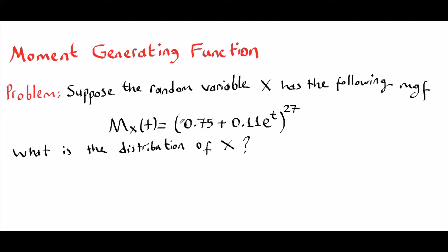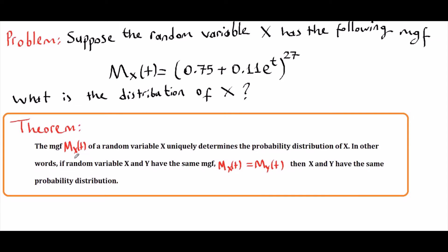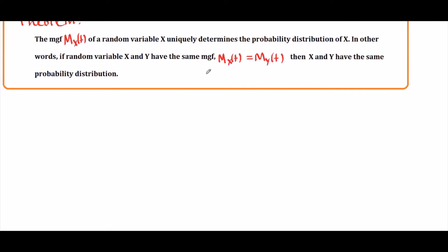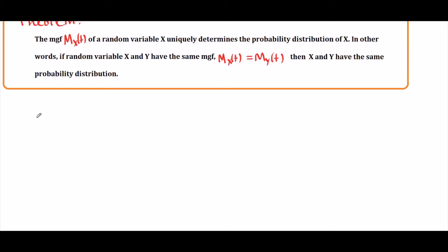Let's check out this problem. Suppose the random variable x has the following moment-generating function: mx(t) = (0.75 + 0.11·e^t)^27. What's the distribution of x? For this problem, we're going to use the theorem that the moment-generating function of a random variable x uniquely determines its probability distribution. If two random variables have the same MGF, they have the same distribution. We found above that the binomial's MGF looks like this, so this must be a binomial distribution.